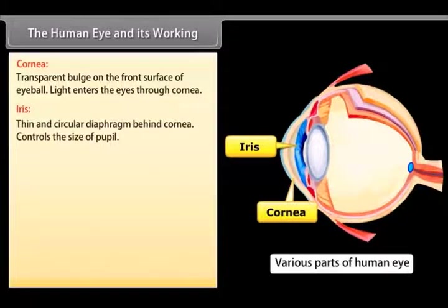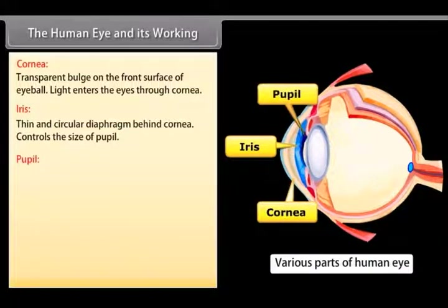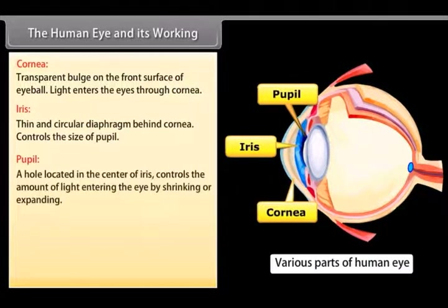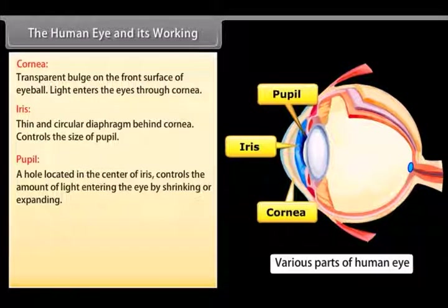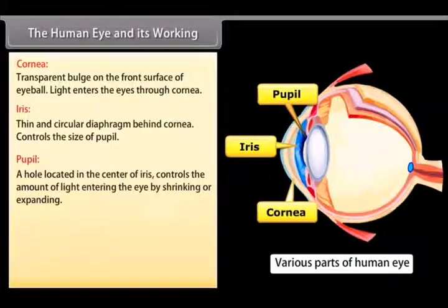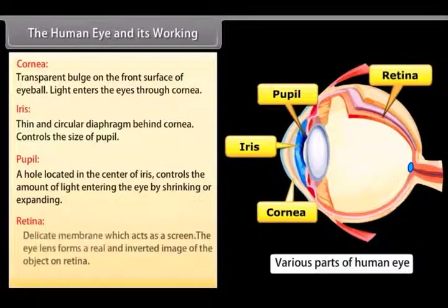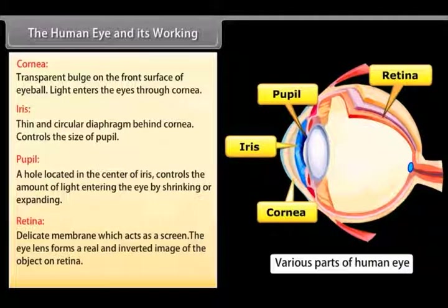The pupil is a hole in the center of the iris that appears black and controls the amount of light entering the eyes by shrinking or expanding. The retina is a delicate membrane which acts as a screen. The eye lens forms a real and inverted image of the object on the retina.